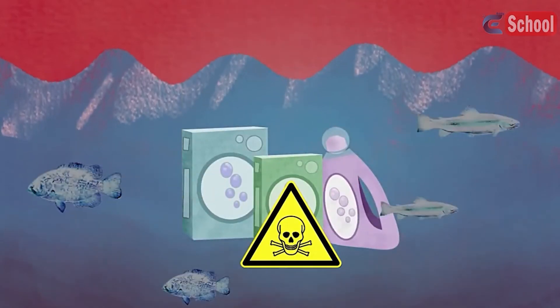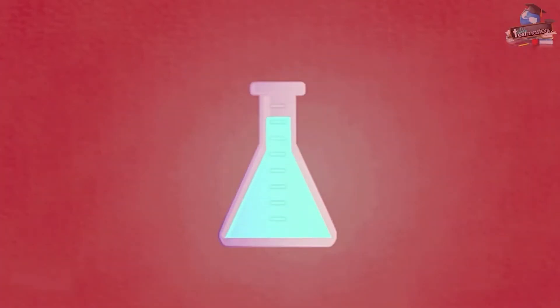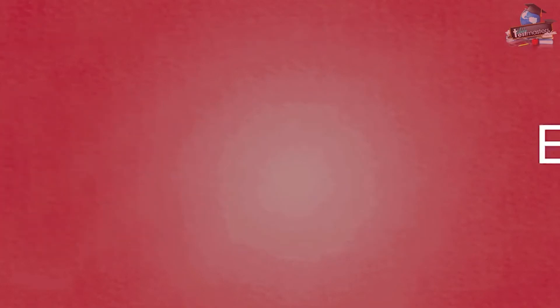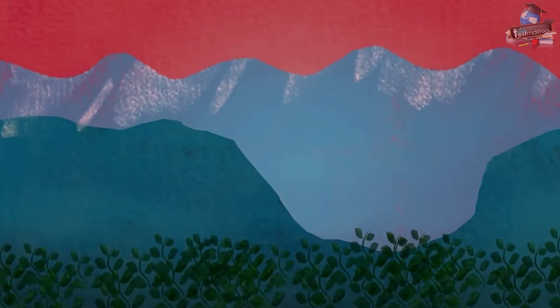One such chemical is phosphate, found in many washing powders, which causes eutrophication. This is when an increased amount of phosphate leads to greater numbers of plant and algal material building up in rivers or lakes.